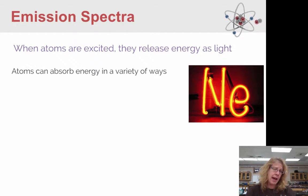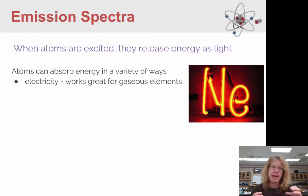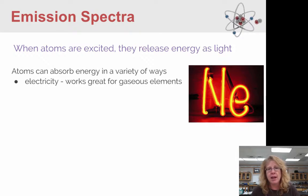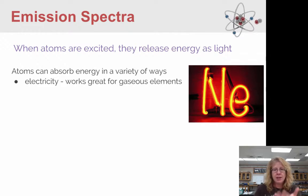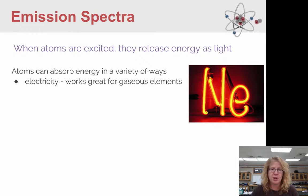So how do atoms absorb energy? They absorb electricity in a couple of different ways. The one we looked at in class was taking little tubes of gas, hooking them up to a high voltage source, and running a bunch of electricity through there. That works great for things already in a gaseous state, where you can get the gas to glow — it forms like a plasma, and you get these beautiful lights, like this nice red neon light over here. If you drive around town, especially at night, you'll see plenty of old neon lights that take advantage of this glass tube, gas, and high voltage situation.